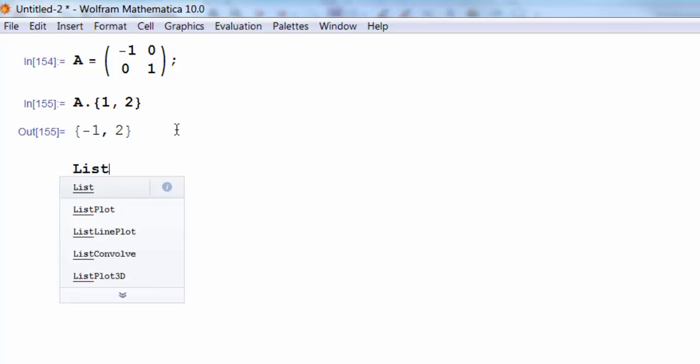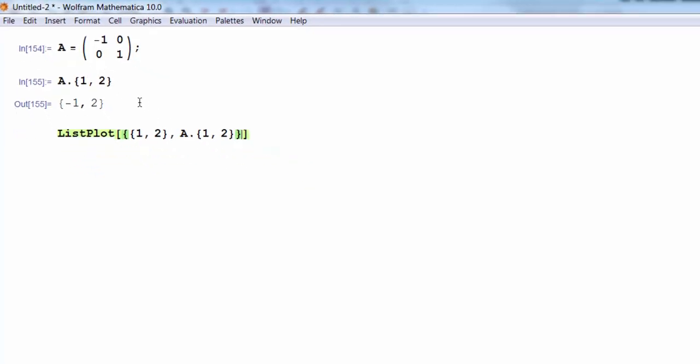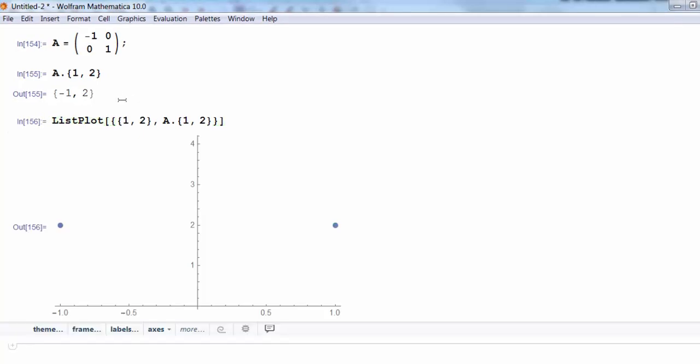So what I'd like to do is plot my two points. I'm going to use the command ListPlot. ListPlot is a command I use for plotting points. And I want to plot two points. I would like to plot my initial point, 1, 2. I'd also like to plot the result of taking my point, 1, 2, and reflecting it about that axis, or hitting it with that matrix multiplication. All right, so there I go. I've plotted these two points. I have my original point, and I have the reflection.